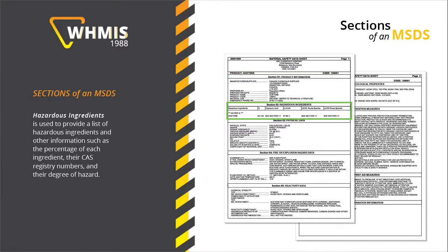The Hazardous Ingredients section is used to provide a list of hazardous ingredients and other information such as the percentage of each ingredient, their CAS registry numbers, and their degree of hazard.